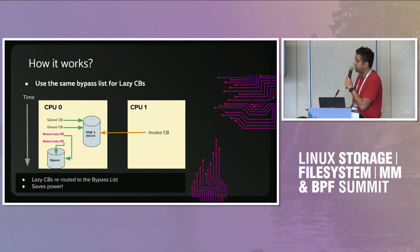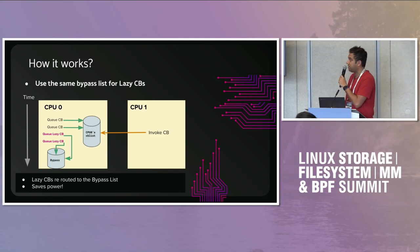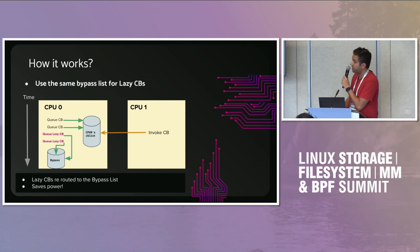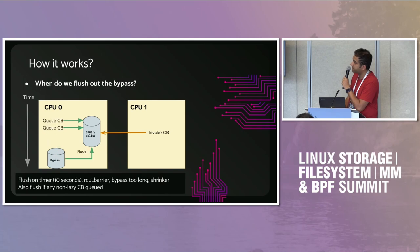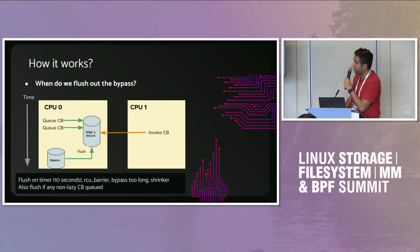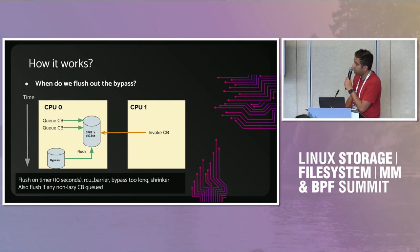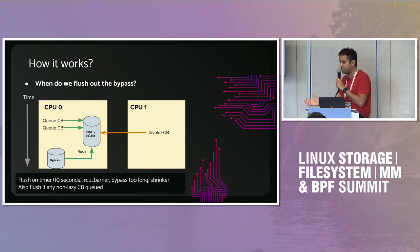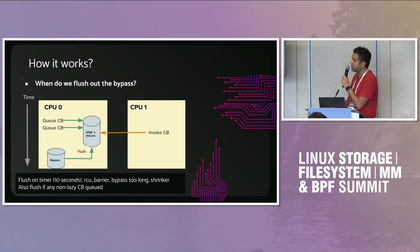My idea was to reuse the same bypass list for lazy callbacks. By doing this, on low CPU utilization use cases, we save 10 to 20% power compared to without this feature. The main change to the bypass mechanism is that the timer now fires only after 10 seconds if the callbacks are lazy. We could reuse all the other bypass mechanism code. Also, if any non-lazy RCU callback is queued, we flush all the lazy ones — since we're triggering RCU anyway, we might as well handle the lazy callbacks too.